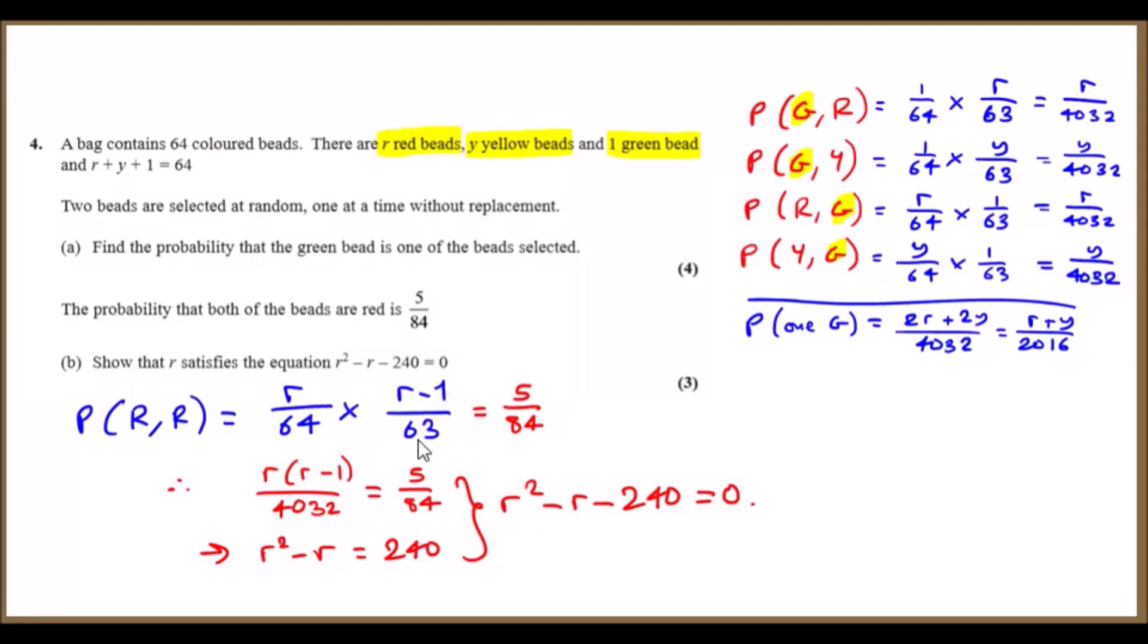Multiplying these two should give us 5r/84. The aim is to work with this equation, simplify it, multiply out like I did below, and then just get this equation. When you do that, times 4032 across all of this gives us 240. Rearrange it and you've got your quadratic equation: r² - r - 240 = 0. Simple, right?